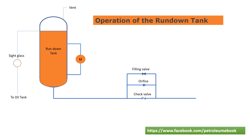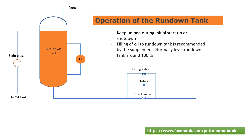The operation procedure for the run-down tank is as follows. The run-down tank is kept unloaded during the initial start-up stage, and the same philosophy is followed for the shutdown stage. The level of oil inside the run-down tank is the parameter on which the rotating equipment start procedure depends. Filling of oil to the run-down tank is provided by a supplemental or additional pump.